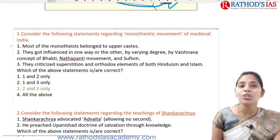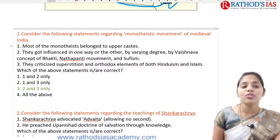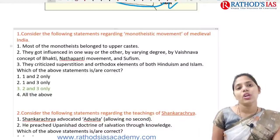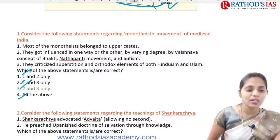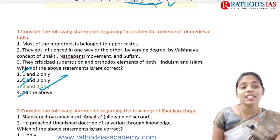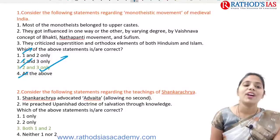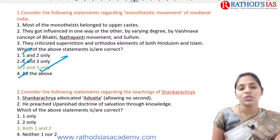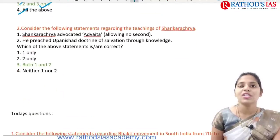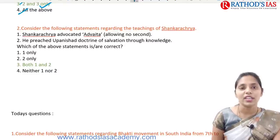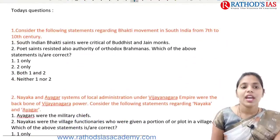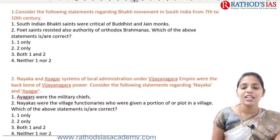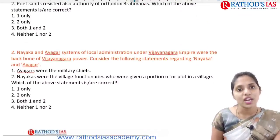Today's questions: First, consider statements regarding the monotheistic movement of medieval India. Most monotheists did not belong to the upper caste but to the lower caste. They were influenced by Vaishnavite Bhakti and Nathpanthi movements and Sufism, and criticized superstitions of orthodox Hinduism and Islam. Correct option: 2 and 3 only. Second question on Shankaracharya: he advocated Advaita and placed importance on Upanishad doctrine for salvation through knowledge. Correct option: both 1 and 2.